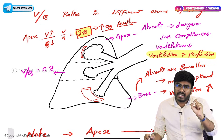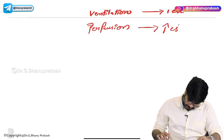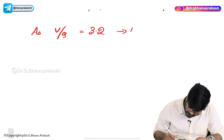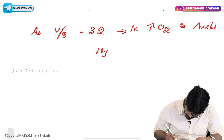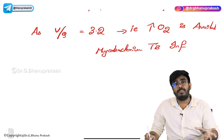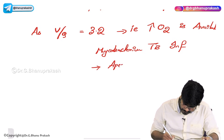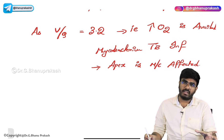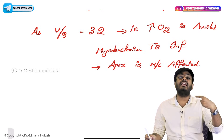As the ventilation-perfusion ratio is greater in the apex, it denotes more oxygen is available there. That is the reason why, in Mycobacterium tuberculosis infection, the upper lobes of the lungs are most commonly affected — because Mycobacterium TB is an aerobic organism, and more oxygen is available in the apex. The oxygen tension in the upper lobes is greater, and the V/Q ratio is 3.2 there.